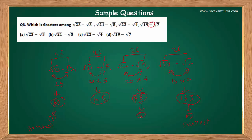So the root corresponding to the smallest product will be the second greatest, and the one just above the smallest product will be third. You were asked to find the greatest among these roots, so it will be √23−√3 — since its product 69 is the smallest of all. Very simple.